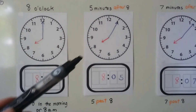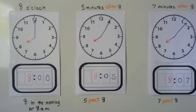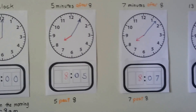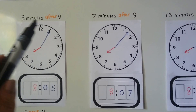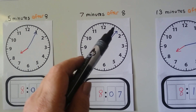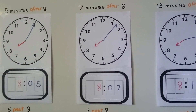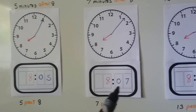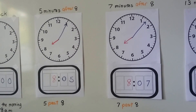When the minute hand is pointing to the 1, we know it's 5 minutes after 8. We can also say it's 5 past 8. Now if the minute hand is two lines past the 1, that's 5, 6, 7 — it's 7 minutes after 8. We can also say it's 7 past 8. On a digital clock, that would be 8:07. When we go from 8:01 to 8:09, we say the word 'o' — that's how we do it in English.